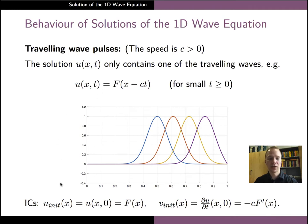The result is shown here. It should be noted that the factor minus c in the initial velocity comes from differentiating the expression f(x - ct) with respect to t.